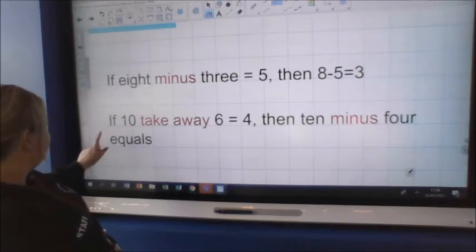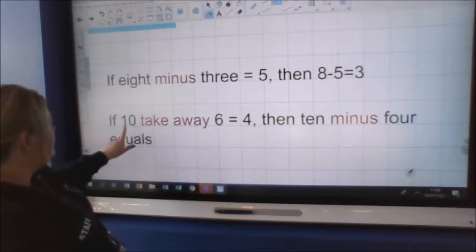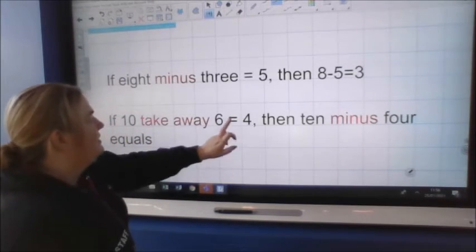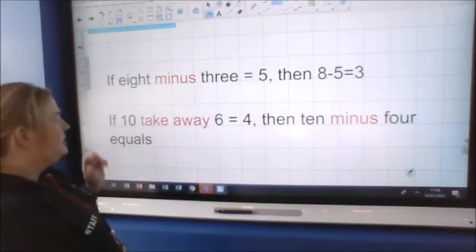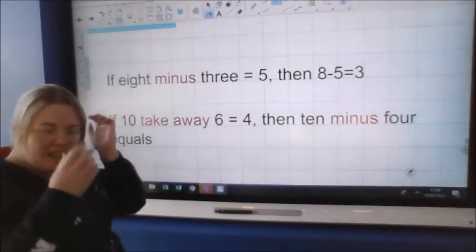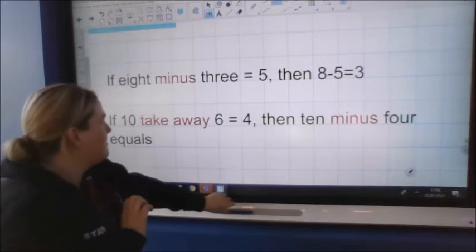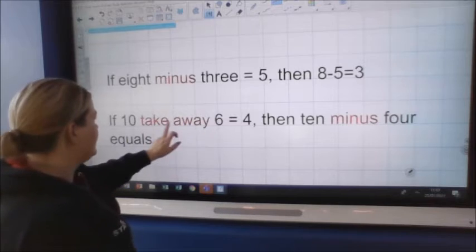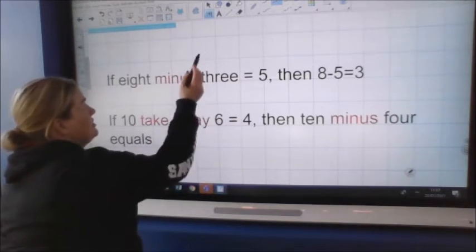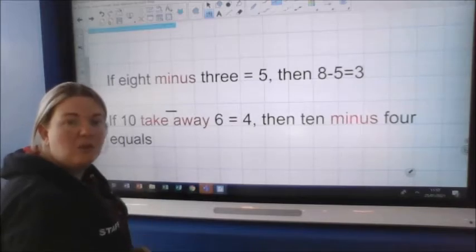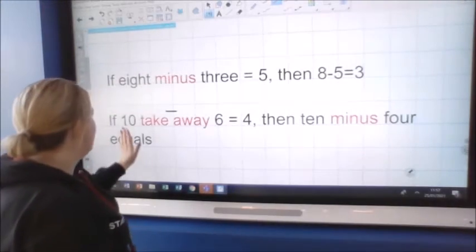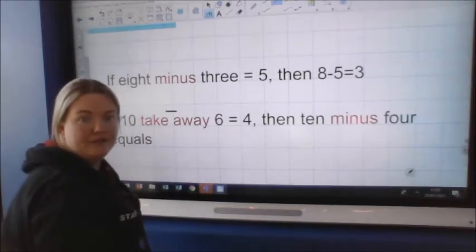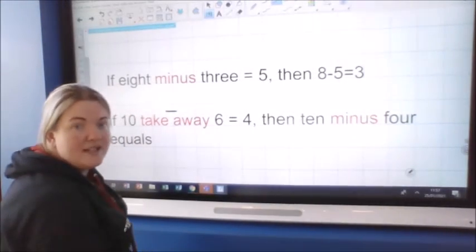So let's look at the next one. If ten take away six equals four, then ten minus four equals what? So we need to work this out. Let me get my pen. So if ten take away six, it's another way of taking away, sometimes it might have the takeaway sign. So I'll put the takeaway sign there just to remind us. It's already done the working out: ten take away six is four.